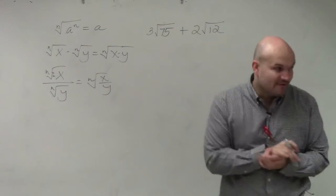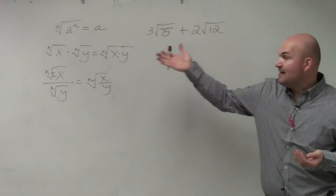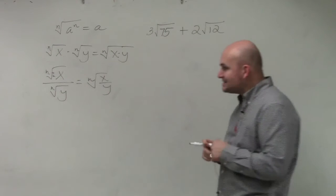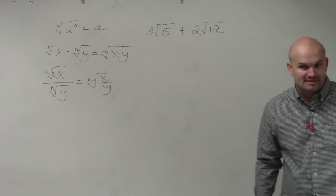Those are the rules so far that we've talked about. The main important thing is the identity. And then you have your multiplying and your dividing. So the next thing that we're going to talk about is adding and subtracting.